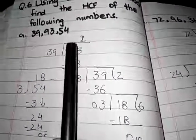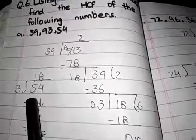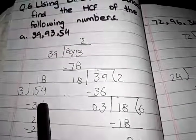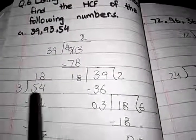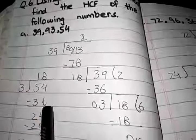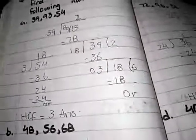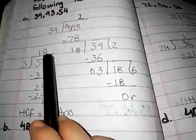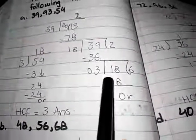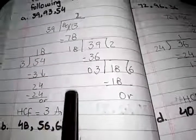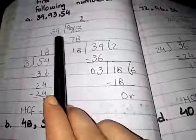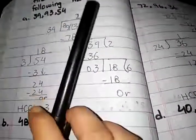So we divide 3 on 54. 3 ones are 3. We subtract 3 from 5, 5 minus 3 is 2. 24 is our dividend. Now 3 eights are 24. Our last remainder is 3 and last divisor is 3. So 3 is the highest common factor of 93, 39, and 54 by division method.